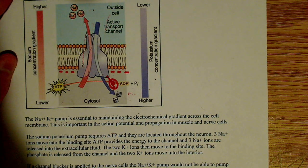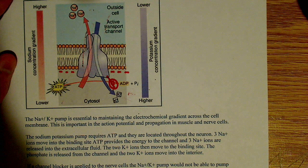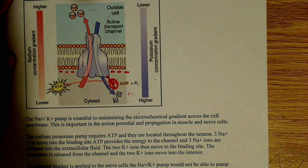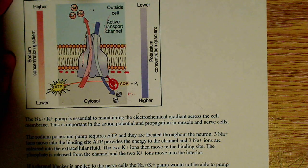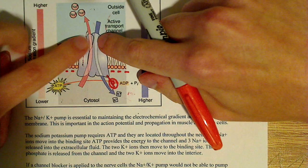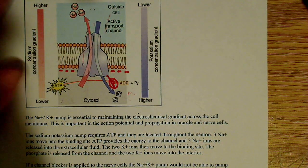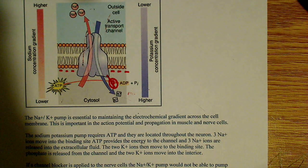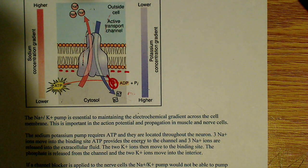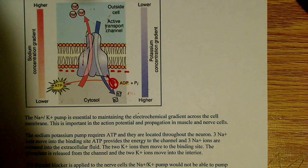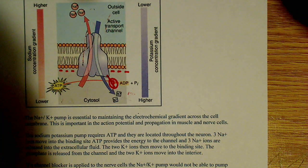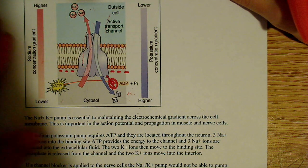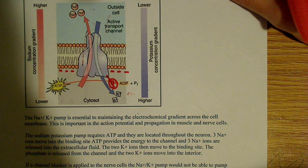And what ends up happening after that is the two K+ ions, or potassium ions, then can bind to the receptors over here. Because it's changed conformation, now it's exposed to two extracellular K+. The extracellular K+ can now bind to the specific sites on the ATPase. And by exposing those sites, the K+ binds.